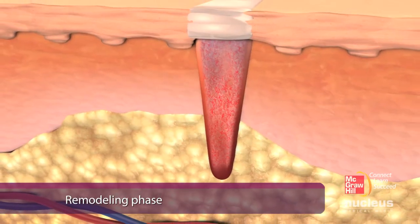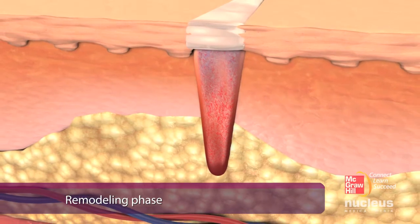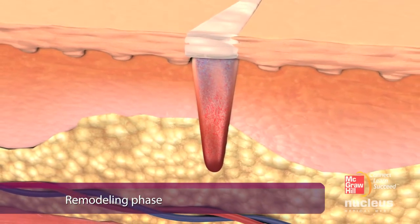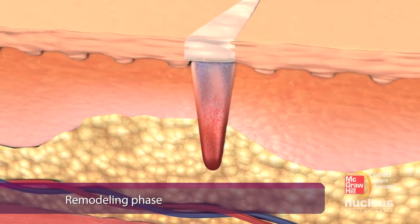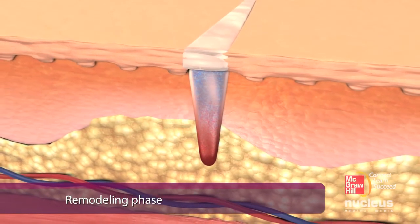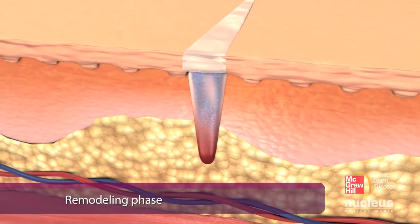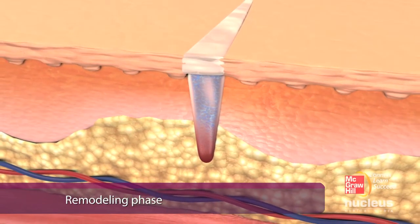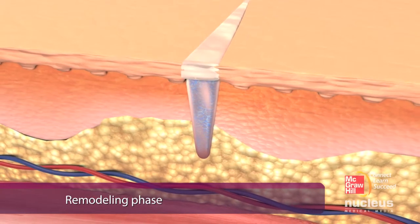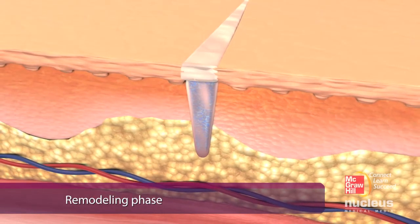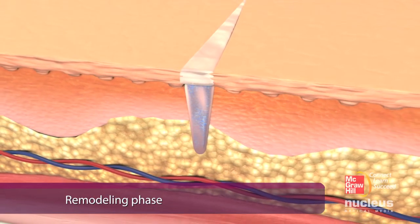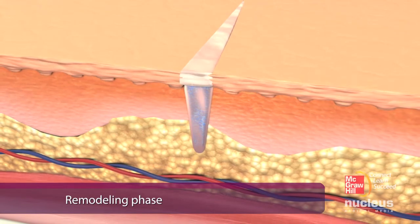The remodeling phase begins several weeks after the injury and can continue for years. During this phase, a new, more organized collagen matrix forms in the wound bed, and capillaries disappear, leaving an avascular scar.